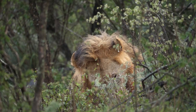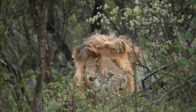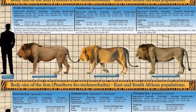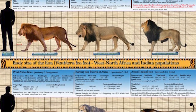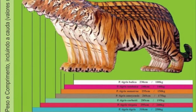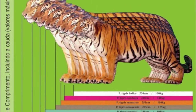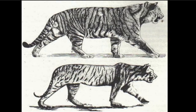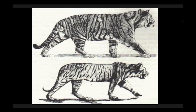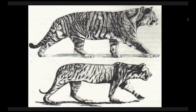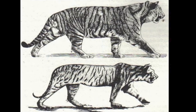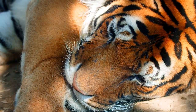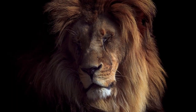O primeiro item que vou analisar é tamanho e peso. Esse é um item que costuma variar bastante entre esses dois animais. As subespécies de leões mais ao norte da África e da Índia costumam ser menores que os leões que vivem no sul da África. Entre as subespécies de tigres, essas variáveis são ainda maiores. Vamos pegar as subespécies que têm os maiores tamanhos da atualidade na natureza: o tigre de Bengala e o leão sul-africano.